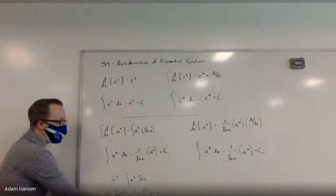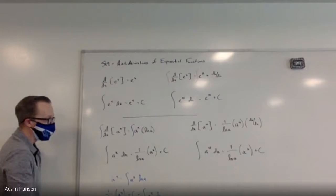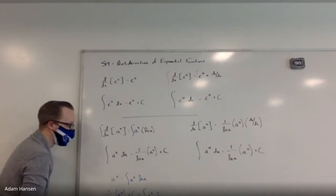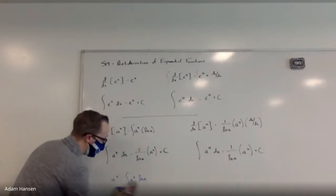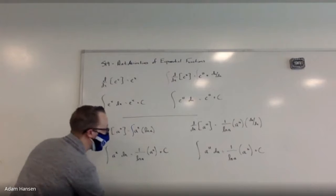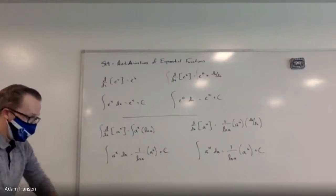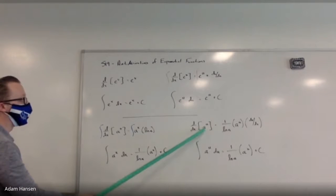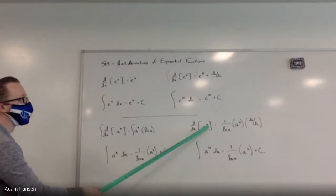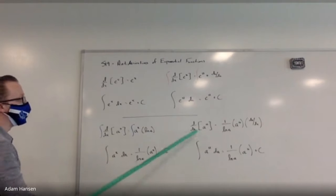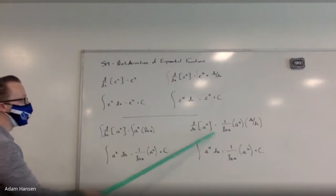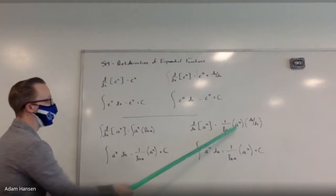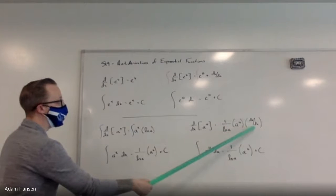One over the natural log of a times a to the x plus C is the anti-derivative of a to the x formula. The notation on your formula sheet: if you have a composite base-a function — a to some differentiable function u in terms of x — the derivative of a to the u is one over the natural log of a times a to the u times du/dx.